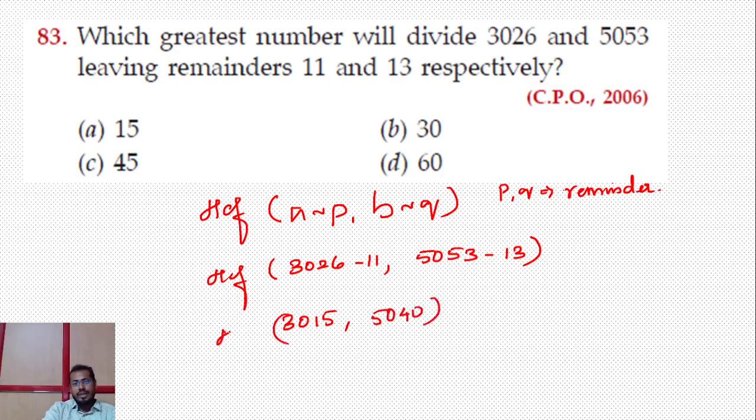So (964 - 41) gives 923, (1238 - 31) gives 1207, and (1400 - 51) gives 1349. We need to find HCF for these numbers. My answer will be either 45 or less.